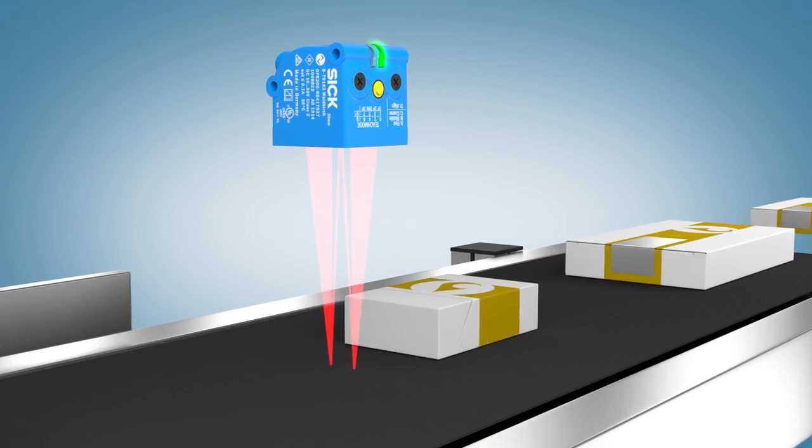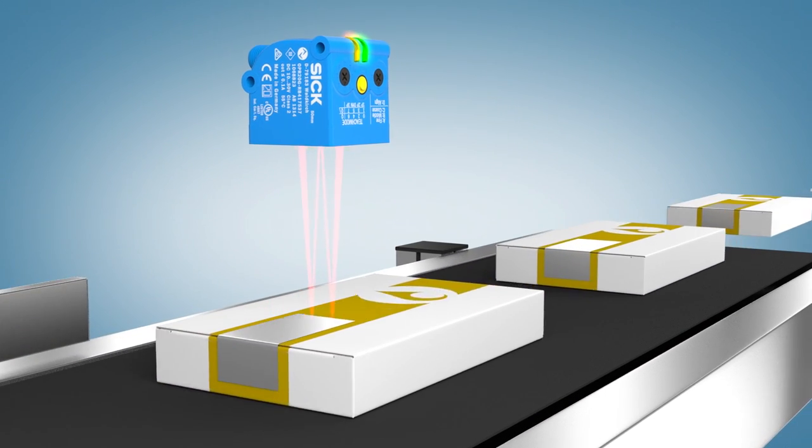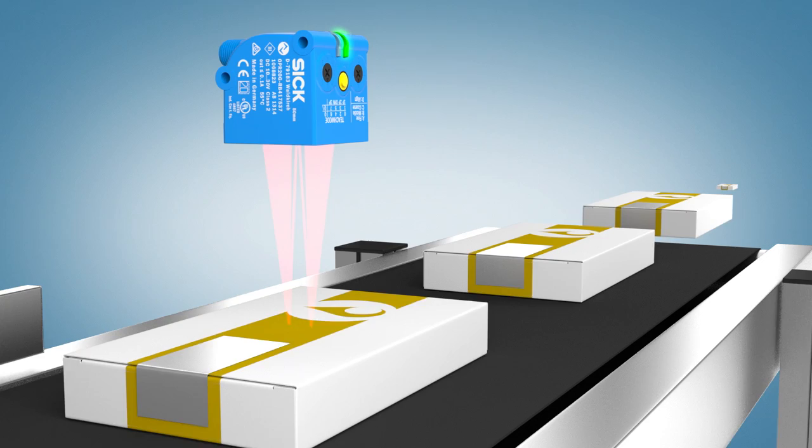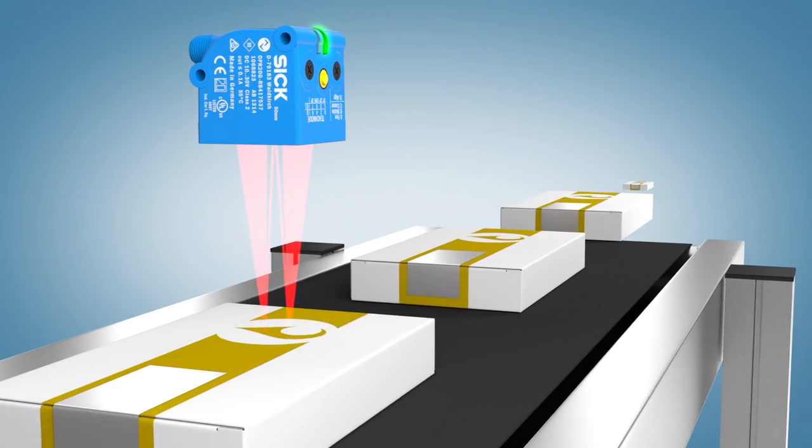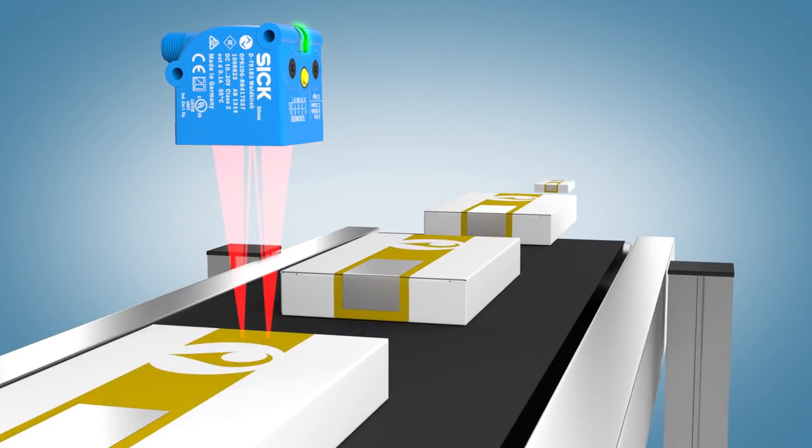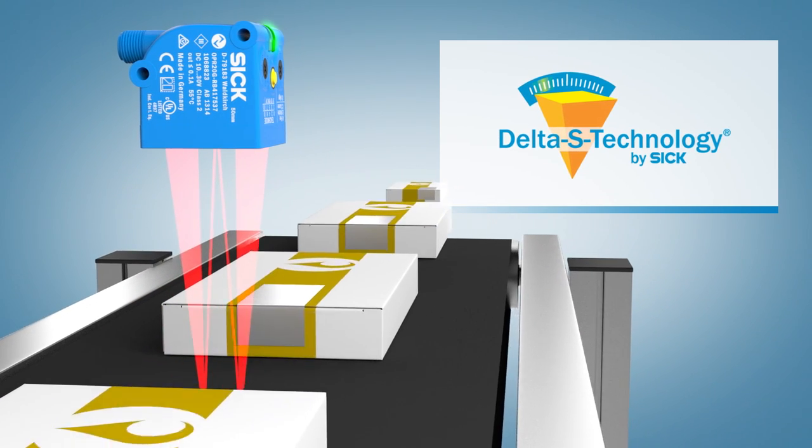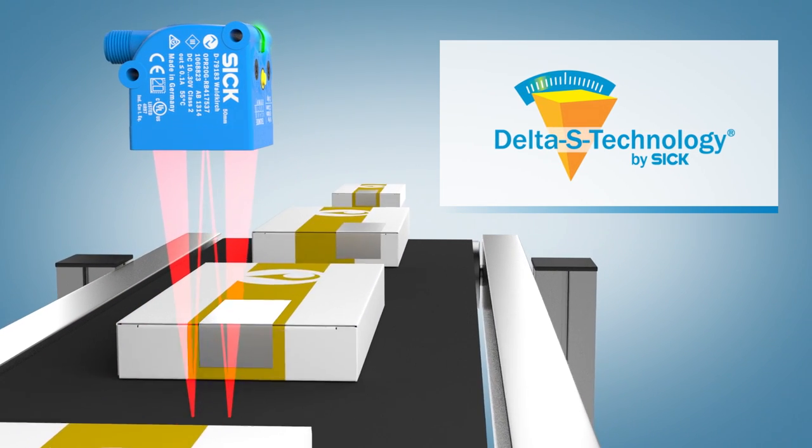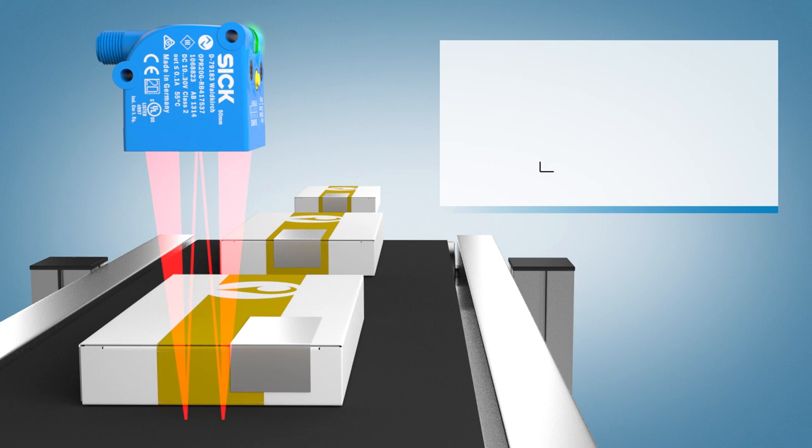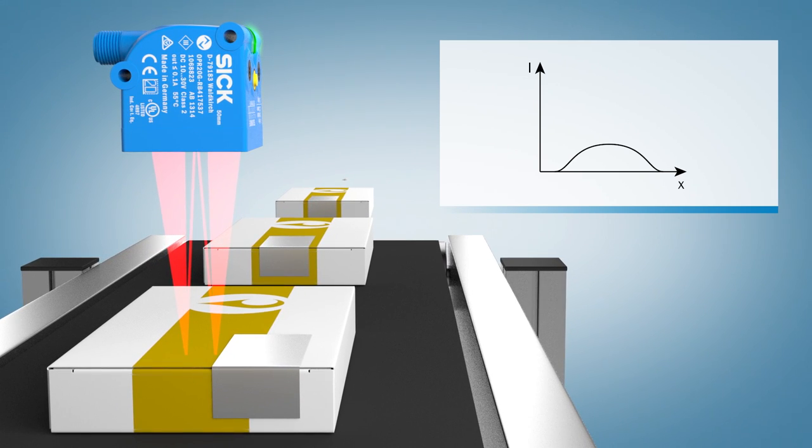For this, the glare sensor uses patented Delta S technology from SICK, which analyzes the spatial behavior of the detected light. Matte objects remit light with a wider spatial distribution.